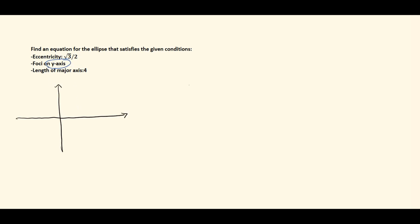It tells us that the foci is on the y-axis, and if it's on the y-axis, that means the y-axis is the major axis, because the foci is always going to be on the major axis. The length of the major axis is four, so from the center we go up two and down two. The vertices of the major axis are at (0, 2) and (0, -2), and the total distance between them is four.